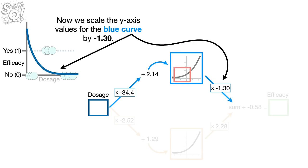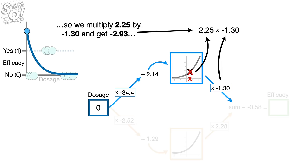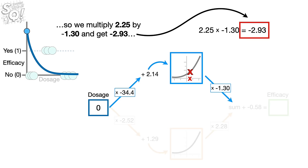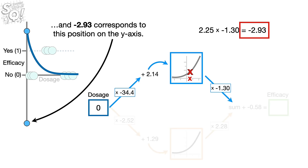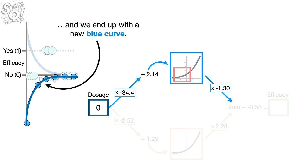Now we scale the y-axis values for the blue curve by negative 1.3. For example, when dosage equals 0, the current y-axis coordinate for the blue curve is 2.25. So we multiply 2.25 by negative 1.3 and get negative 2.93, which corresponds to this position on the y-axis. We multiply all of the other y-axis coordinates on the blue curve by negative 1.3 and we end up with a new blue curve.